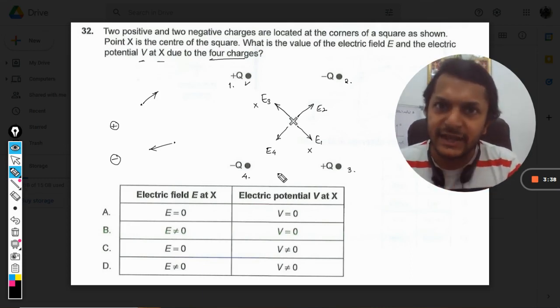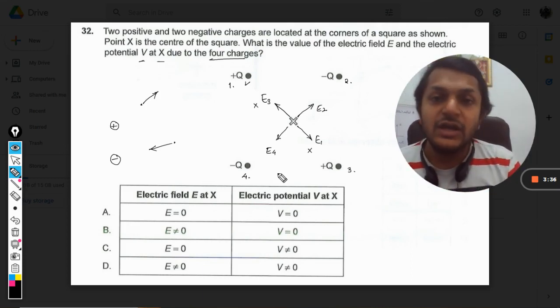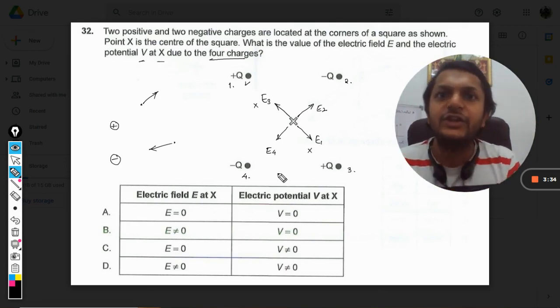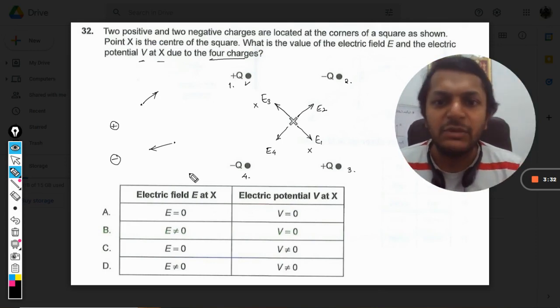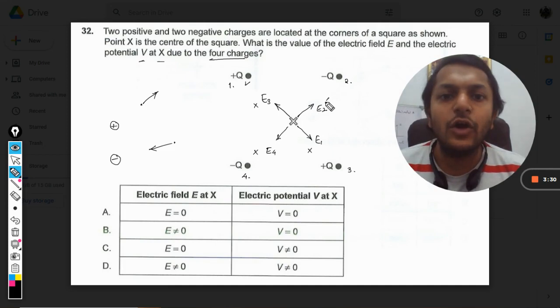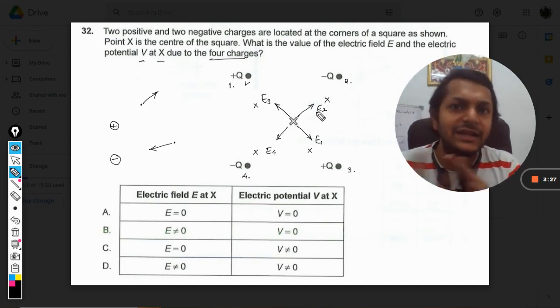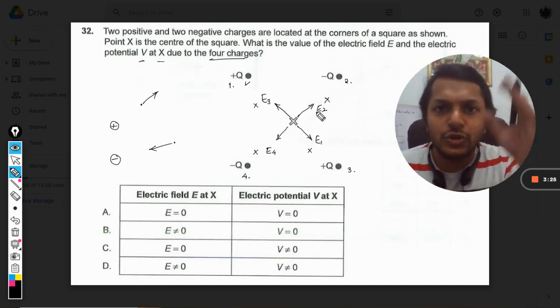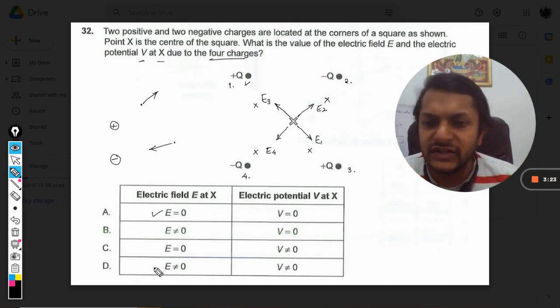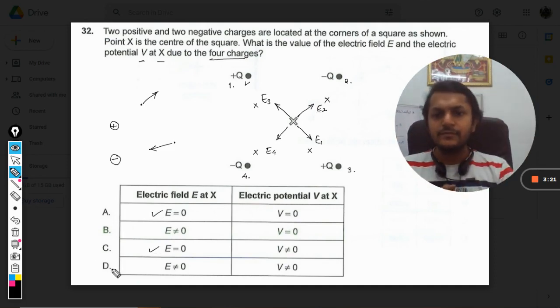Now because the magnitude of the second charge and the fourth charge is the same, and the distances are also the same, we can say that the magnitude of E2 and E4 is the same. So these two will also cancel each other. So overall, the net electric field at point X should come out to be equal to zero.